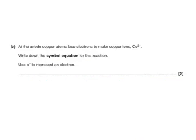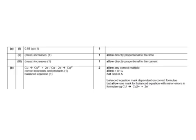At the anode, copper atoms lose electrons to form copper ions, Cu²⁺. Write down the symbol equation for this reaction using e⁻ to represent an electron. We're starting off with Cu atoms and losing two electrons to make Cu²⁺ ions. Although the answer is that the mass increases with current and time, they also allow that it's directly proportional — so if you double the time you double the mass of copper, and if you double the current you double the mass of copper.